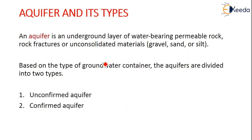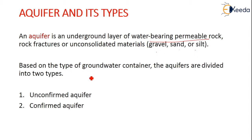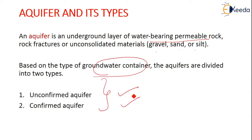Let us learn about aquifers and their types. An aquifer is an underground layer of water-bearing permeable rock, or rock features of consolidated material like gravel, sand or silt. Based on the groundwater container, aquifers are divided into two types: unconfined aquifer and confined aquifer.